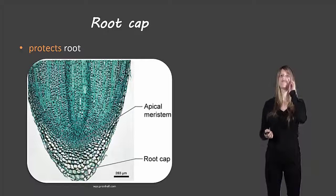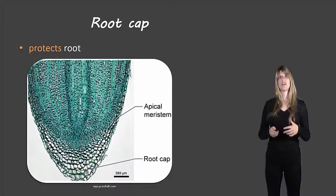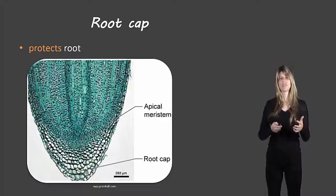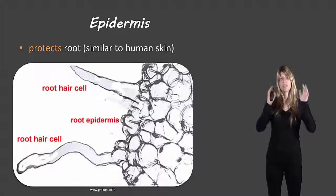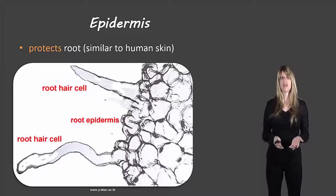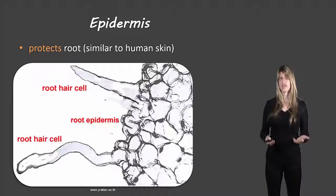Now there are also a couple specific types of tissues that we'll look at. So there's the epidermis which is a type of tissue that surrounds the outside of the root and that just protects the root. This is similar to human skin.